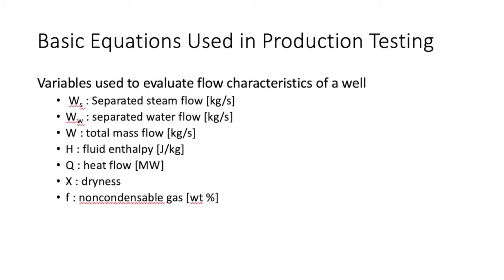Some basic equations are used in production testing. In most conditions it is assumed that steam and water properties of a geothermal well are at saturation conditions and local pressure. However, some wells do produce dry steam and superheated conditions may exist. In that case, steam properties must be evaluated at the temperature and pressure of the steam itself.